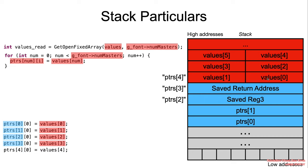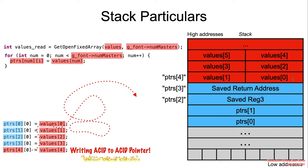Notice now that values[0] is a pointer controlled by the attacker. values[4] is data also controlled by the attacker. We are writing attacker-controlled input data to attacker-controlled input data pointer. This is a typical illustration of a write-what-where primitive.